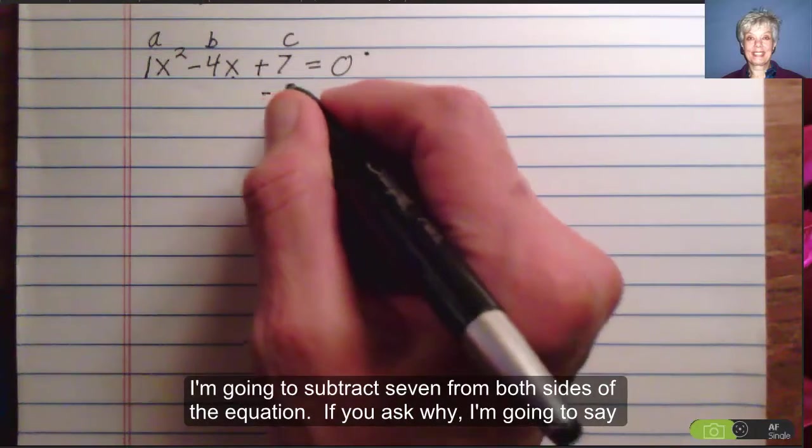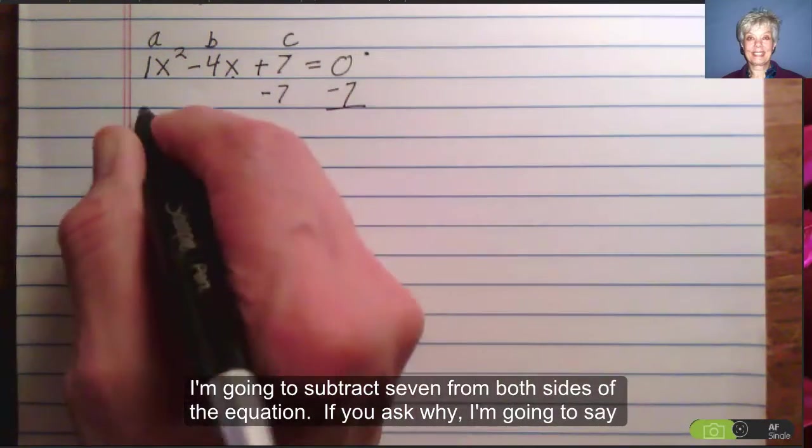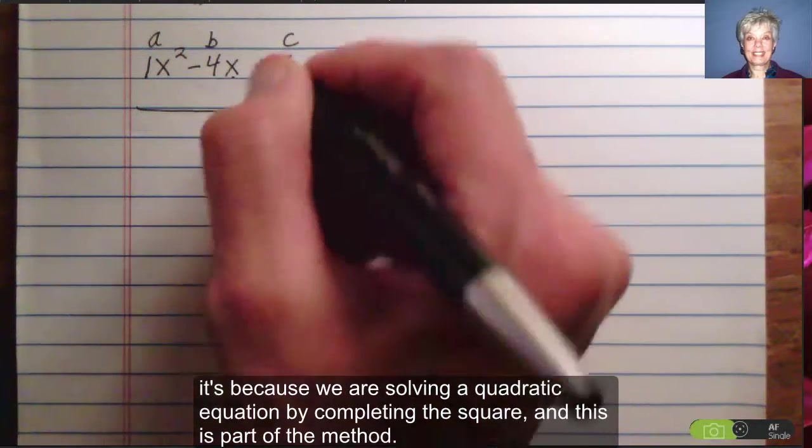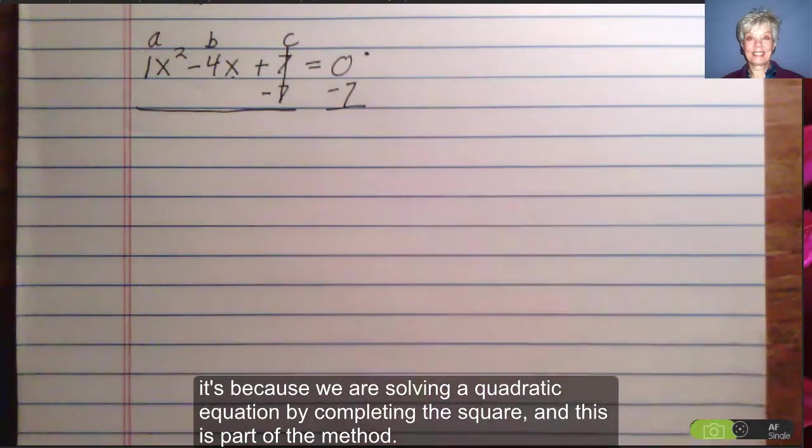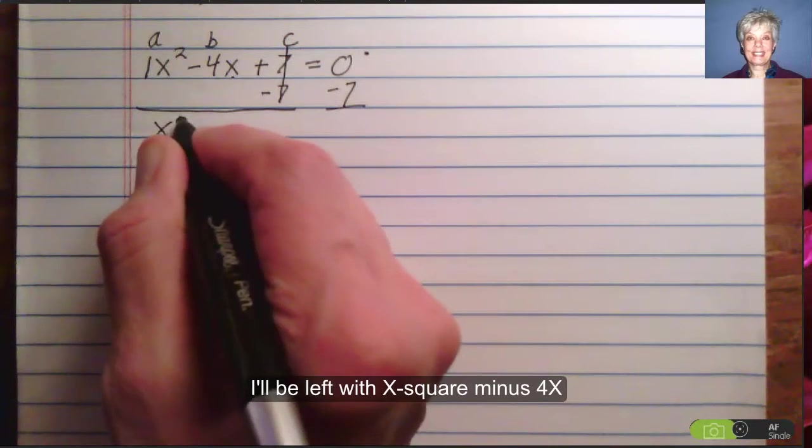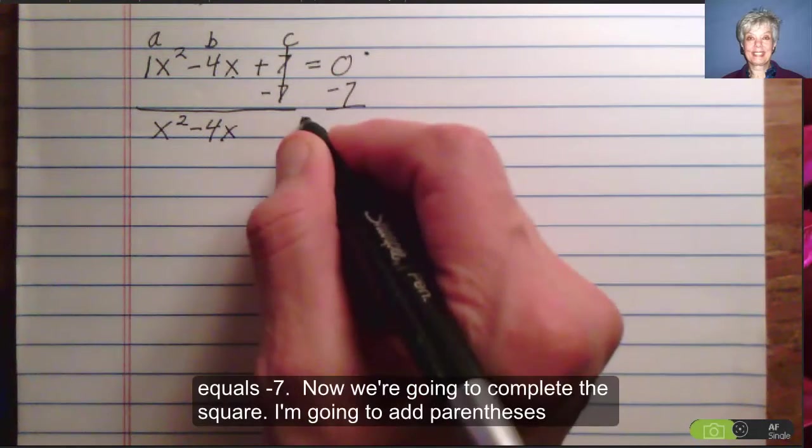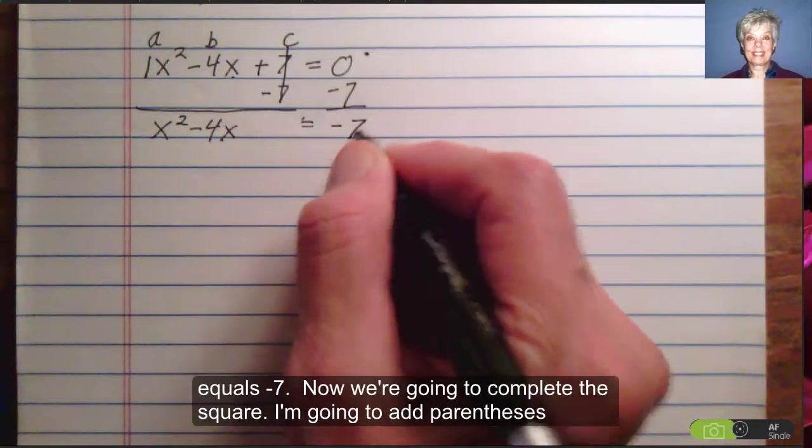I'm going to subtract 7 from both sides of the equation. Now if you ask why, I'm going to say it's because we're solving a quadratic equation by completing the square and this is part of the method. I'll be left with x squared minus 4x equals negative 7.